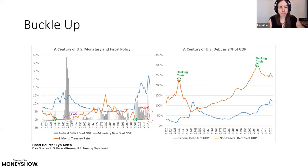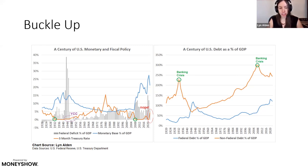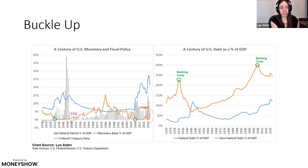I've used this slide in prior Money Show presentations. The chart on the left shows a century of U.S. monetary and fiscal policy. The orange line is three-month treasury rates, basically a proxy for short-term safe rates. The blue line is monetary base as a percentage of GDP — basically money printing for the base layer. The gray bars are federal deficits. They hit zero in the early 1930s, and didn't hit zero again until 2008. When they run out of room to cut rates, they turn to money printing — quantitative easing — in both environments.